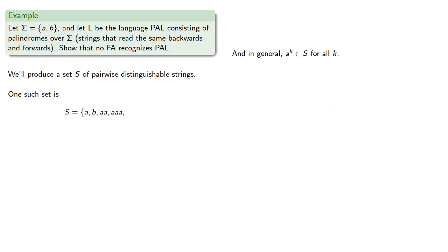And in general, A to the K is an element of our pairwise distinguishable set for all K.